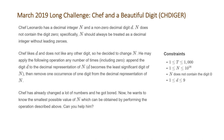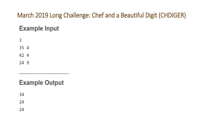Let's take a look at the examples that CodeChef provided. We have three test cases, and we're given the three pairs of numbers and their favorite digit: 35 and 4, 42 and 4, and 24 and 9. The resulting smallest decimal numbers we can get are 34, 24, and 24.